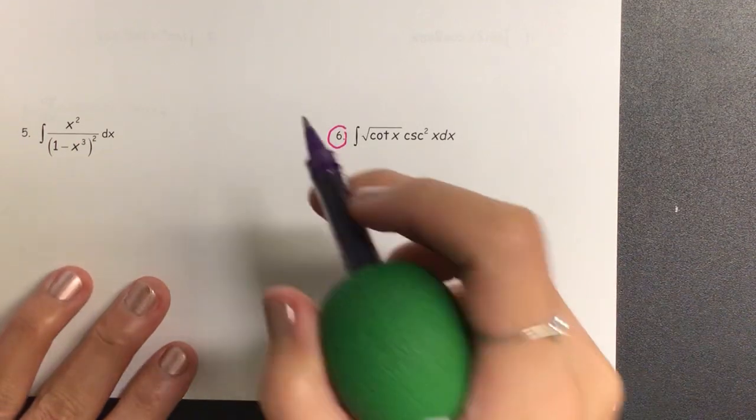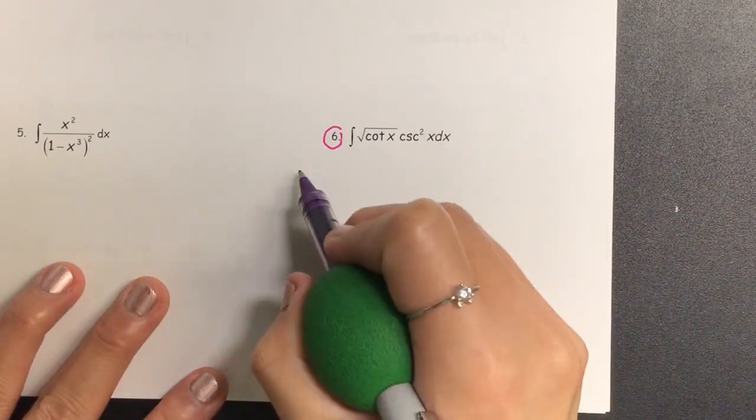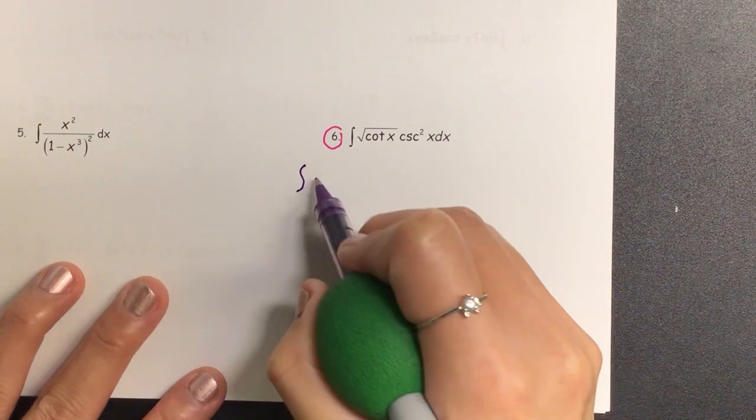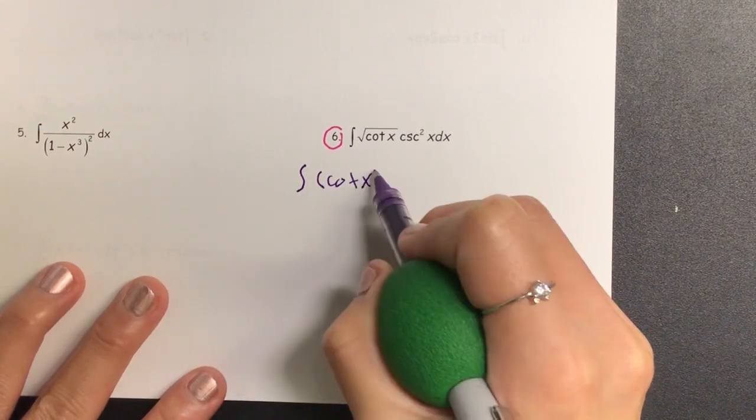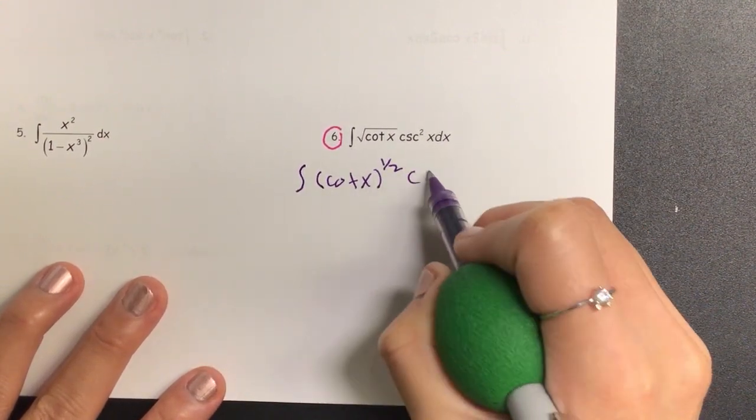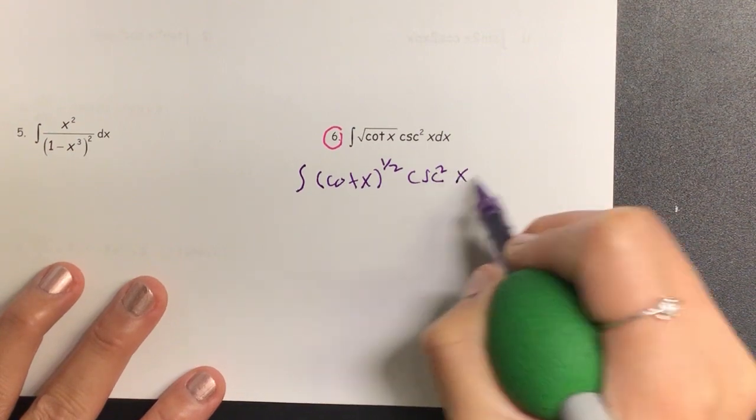Okay, let's start by rewriting this. So we have the integral of cotangent x to the one-half cosecant squared x dx.